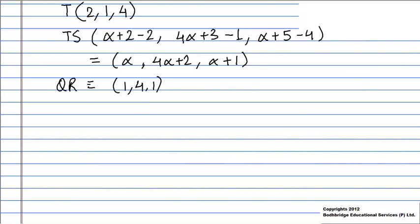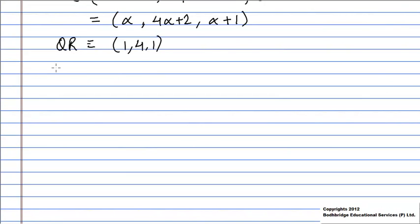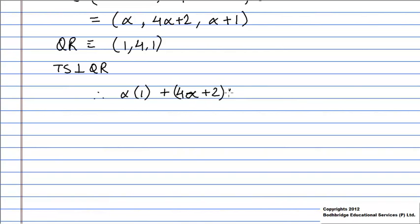As TS is perpendicular to QR, the sum of the products of the direction ratios of TS and QR will be equal to 0. Therefore, α(1) + (4α + 2)(4) + (α + 1)(1) = 0. Solving this, we get α = -1/2.